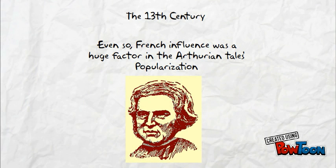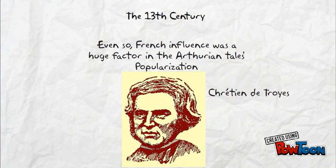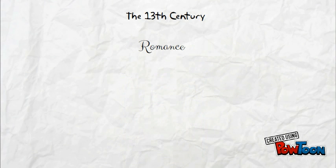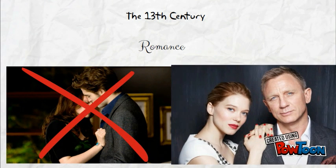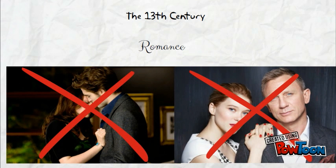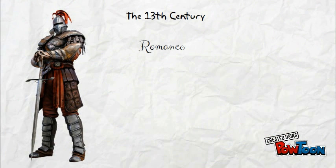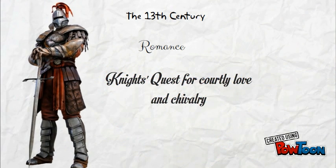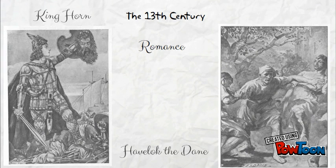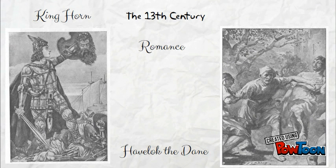Chrétien de Troyes, a 12th century French poet, wrote Arthurian tales which largely impacted the spread of the romance genre during this time. And by romance, we do not mean a love story between a sparkling vampire and a fragile girl, or a cheesy love story between a manly man and a cute lady. Romance here is the tale of knights, their heroic adventures, battles in the name of courtly love and chivalry. Other English romance works of this period include King Horn and Havelok the Dane, in which the authors of both works are unknown or anonymous.